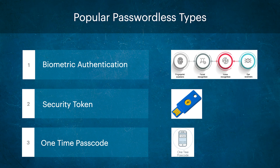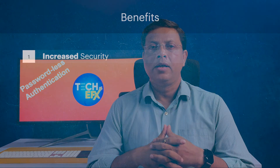The third method is one-time password, also called OTP. This method sends a code via text message or email to the user's mobile phone or email address. The user then enters the code to complete the authentication process. One-time codes are convenient as they can be sent to any device and are relatively easy to implement. Google Authenticator and Microsoft Authenticator are examples of one-time code based authentication.